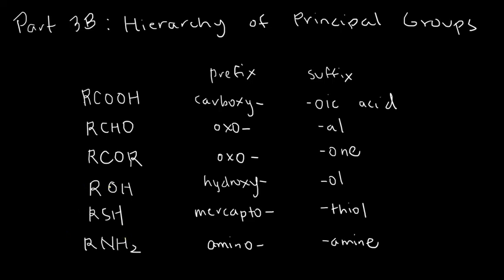For example, if you have a compound that is both an aldehyde and an alcohol, you use the suffix -al, and to indicate the presence of OH in the same compound, you use the prefix hydroxy. Or if you have a ketone that is also an amine, you use the suffix -one because the ketone has the higher rank, and since amines are of lower rank, instead of being suffixed, they will be prefixed as amino.